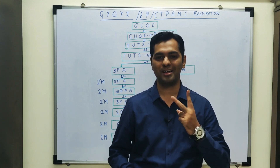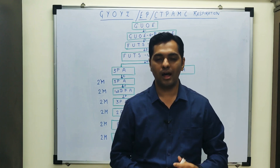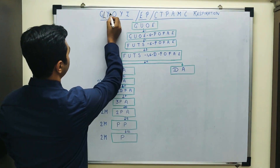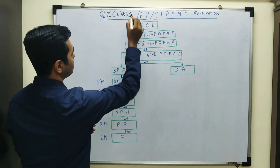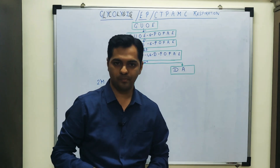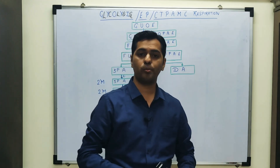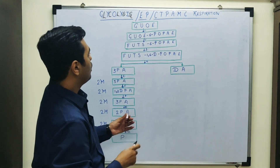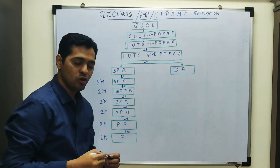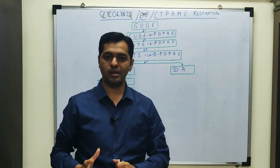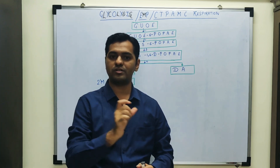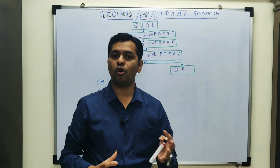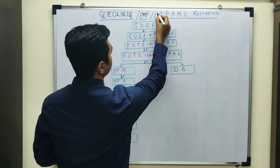Hello future doctors, welcome to Dipenism. I am Dr. Dipen and today we are going to discuss about a concept with reference to respiration. The event we are discussing is glycolysis. Glycolysis is the first step of both aerobic and anaerobic respiration, hence we call glycolysis a common pathway. Glycolysis is also known as the EMP pathway, and the site of glycolysis is the cytoplasm.